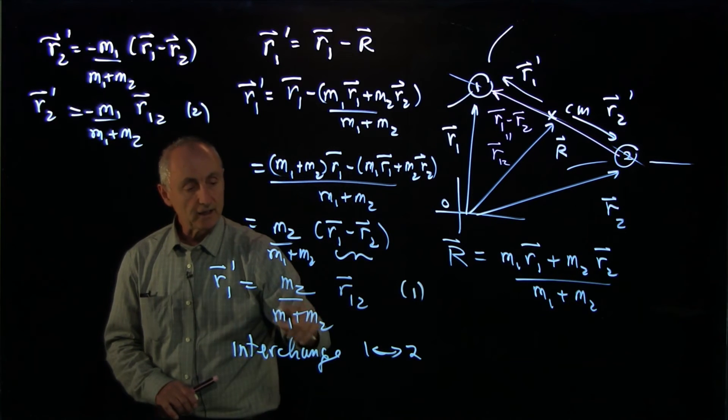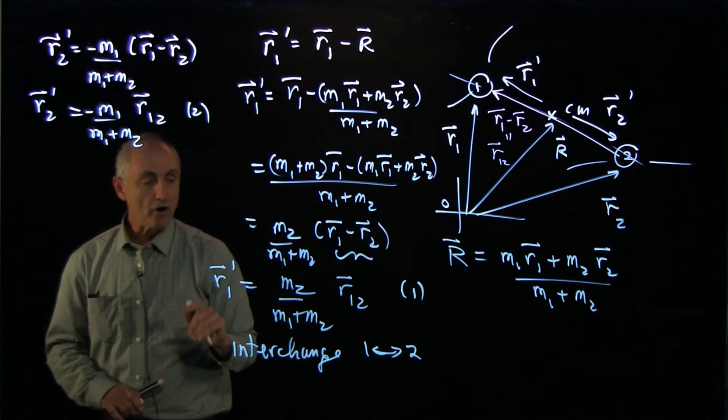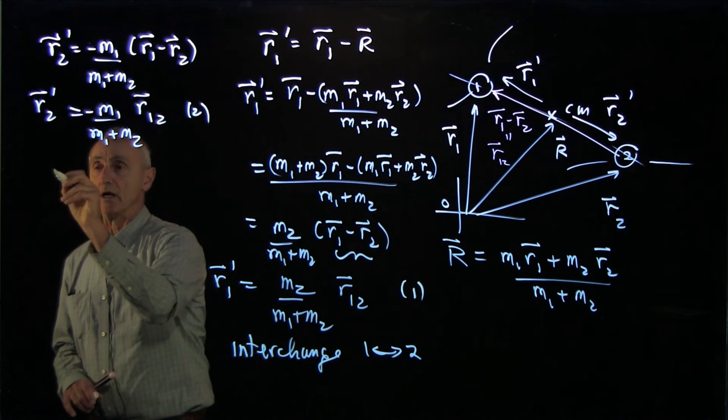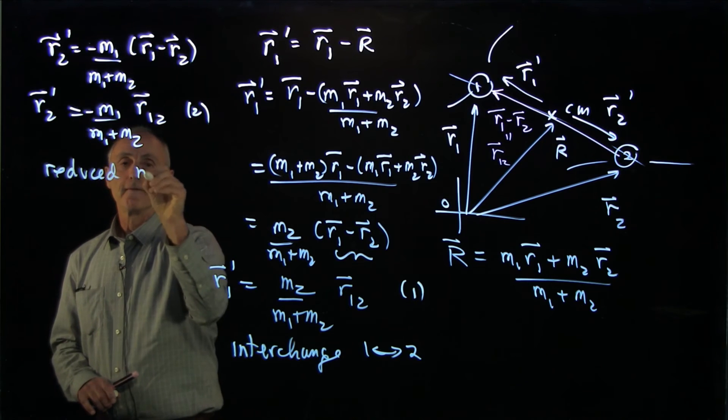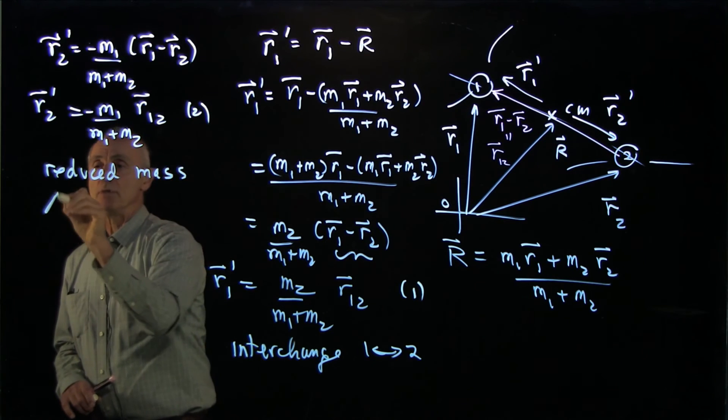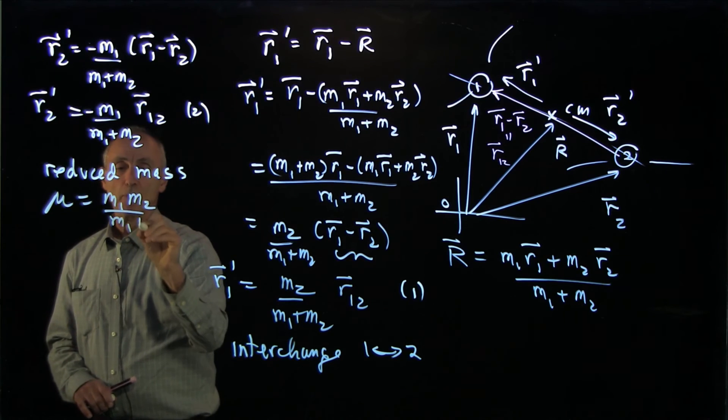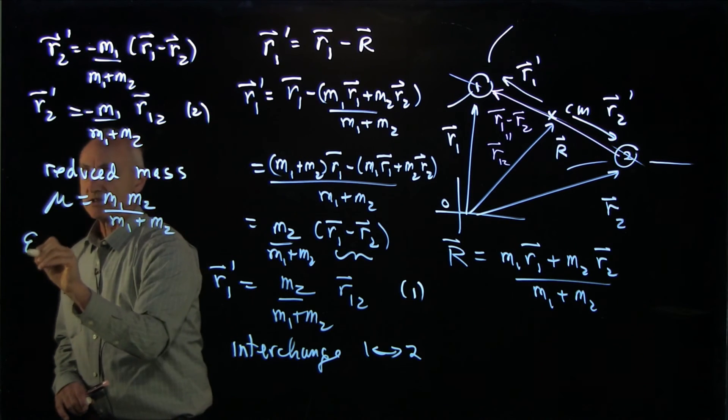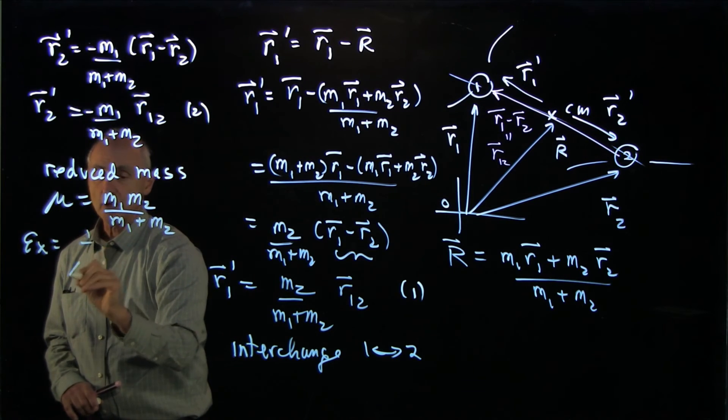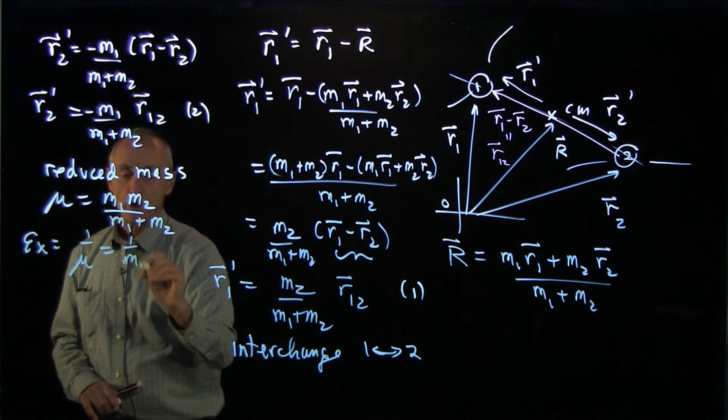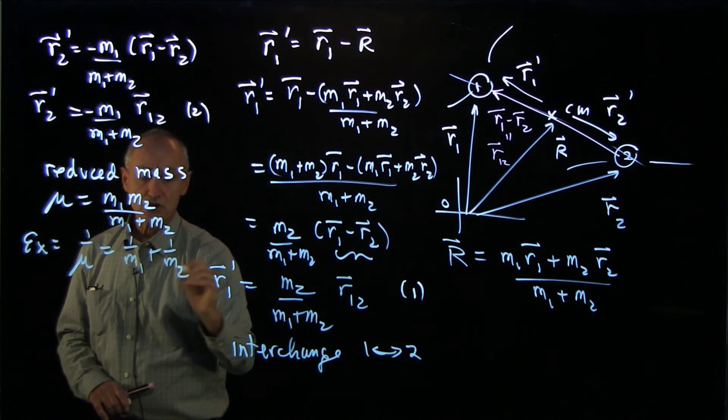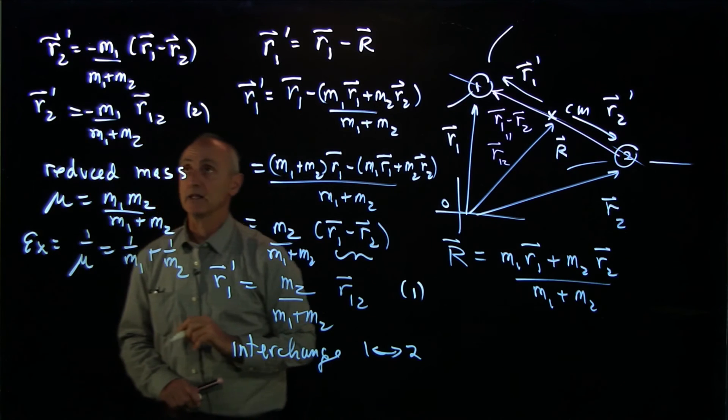This quantity in here will appear often. I'd like to introduce a new quantity called the reduced mass. That reduced mass, mu, is the product of m1 m2 over m1 plus m2. It's a simple exercise to see that 1 over mu is 1 over m1 plus 1 over m2. We'll encounter that a little bit later.